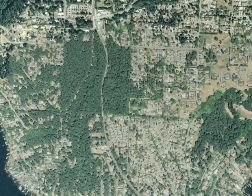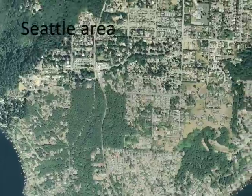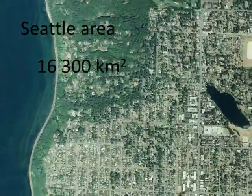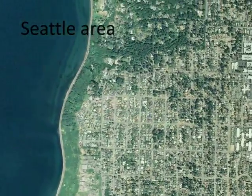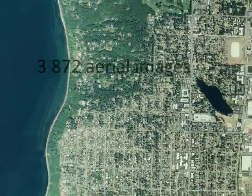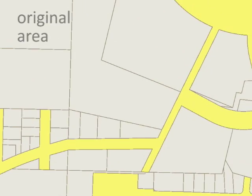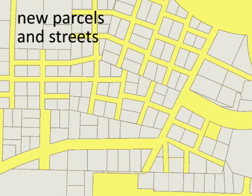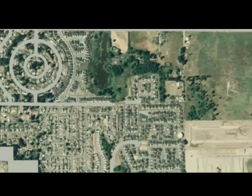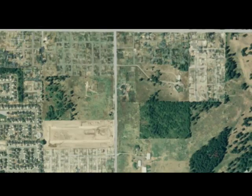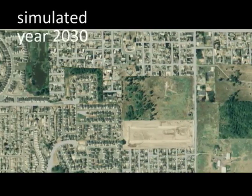We have applied our approach to the exploration and visualization of a 30-year simulation of Seattle, Washington and its surroundings. The simulated area contains over 16,000 square kilometers, 1.4 million parcels, and 3,872 aerial images. While we have explained the algorithm using simple rectangular shapes, the method can be applied to arbitrary shapes, yielding parcels and streets that resemble a particular style. We show an area of the southern side of Tacoma, Washington.